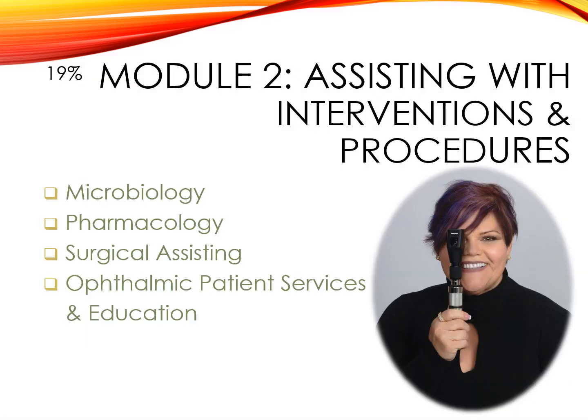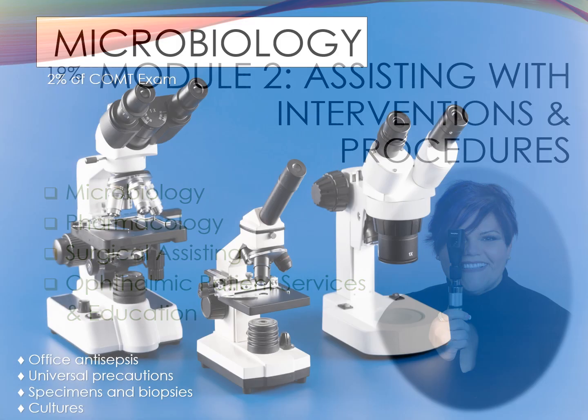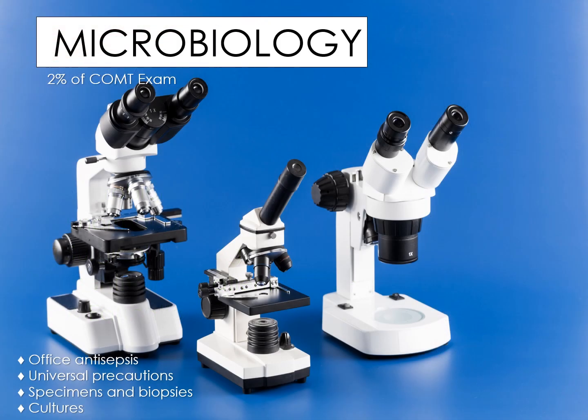Module 2: Assisting with Interventions and Procedures. This section will comprise 19% of your exam and includes microbiology, pharmacology, surgical assisting, and ophthalmic patient services and education. Microbiology is approximately 2% of the exam. In this section, we're going to examine office antisepsis, universal precautions, specimens, biopsies, and cultures.